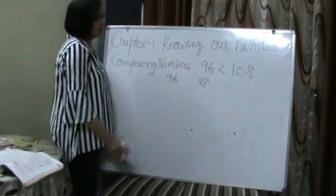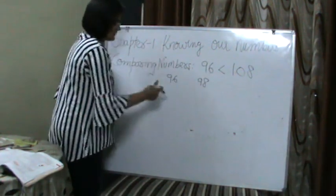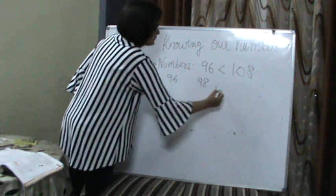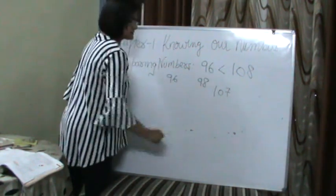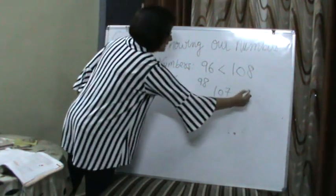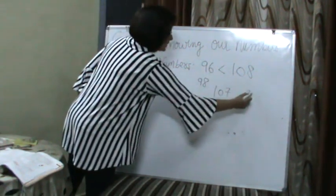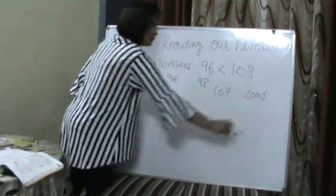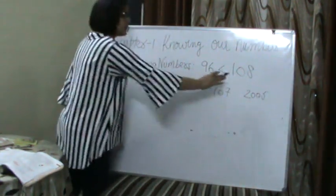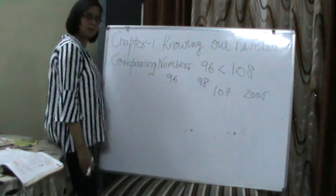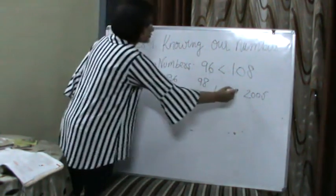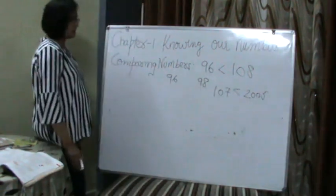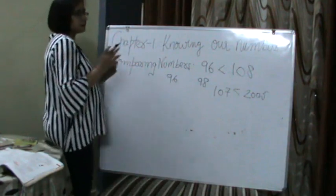Suppose I have given you two numbers — this is 107 and this is 2005. Now out of these two numbers, which number is bigger? 2005. Right?